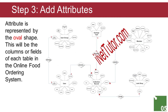Step 3: Add attributes. An attribute is represented by an oval shape. This will define the columns or fields of each table. The last part of the ERD process is to add attributes to our entities.